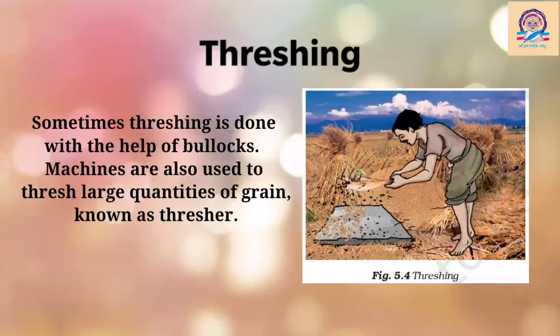It's a very simple process. Sometimes threshing is done using bullocks and also machines. The machines used to do threshing are known as threshers. When the quantity of grains is very large, we use machines to separate the seeds from the stems.